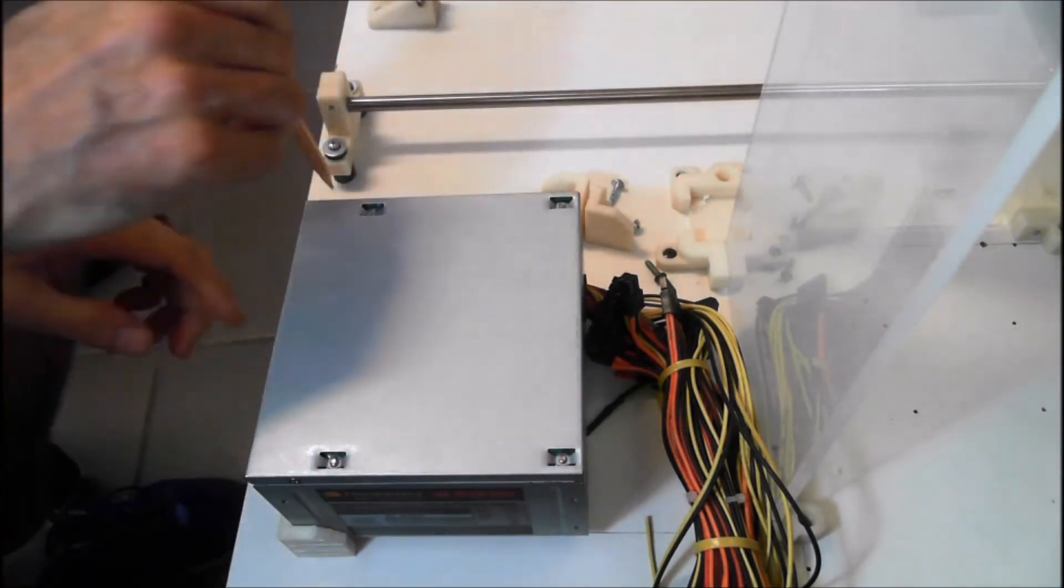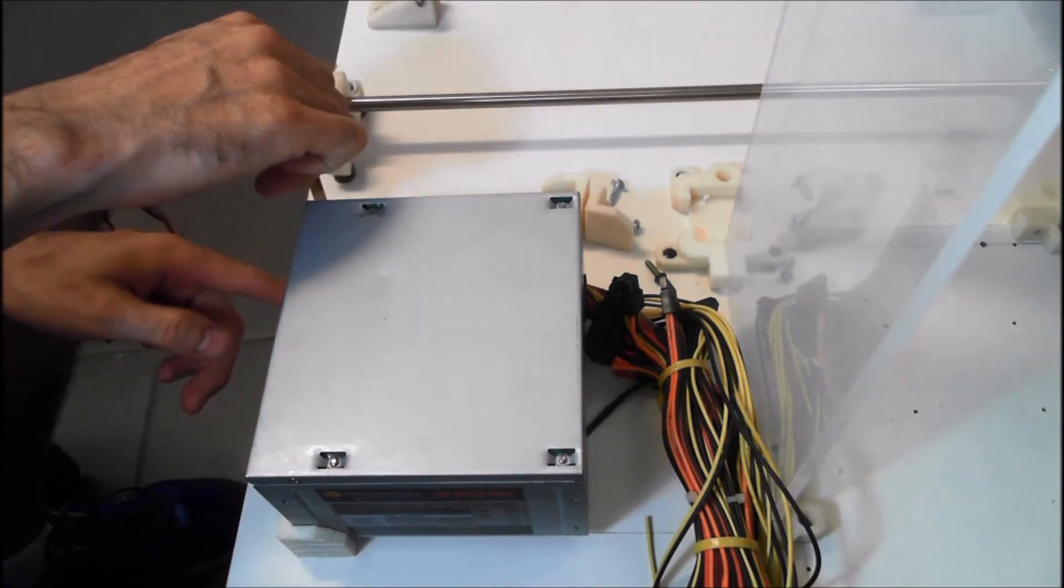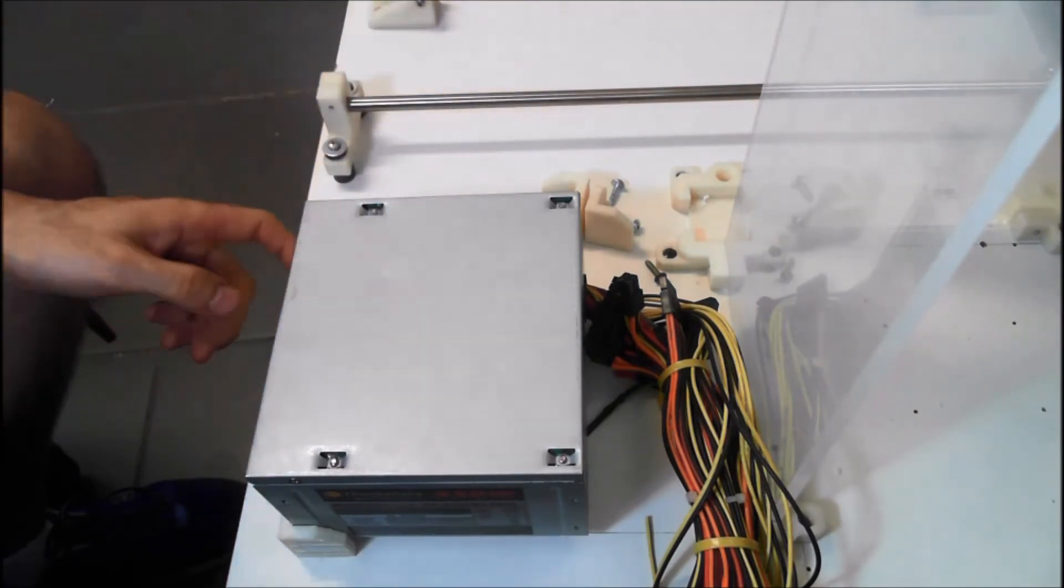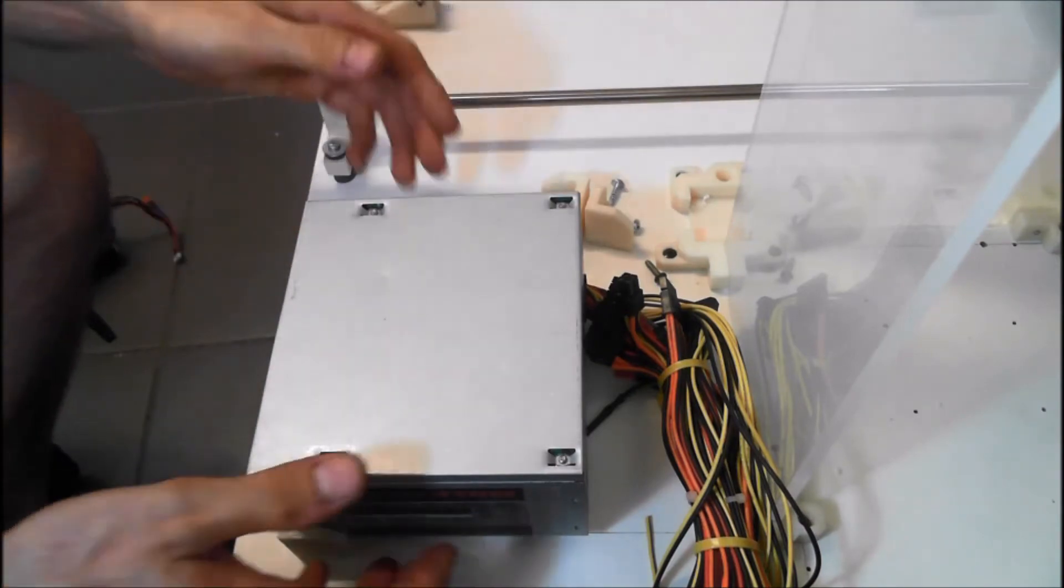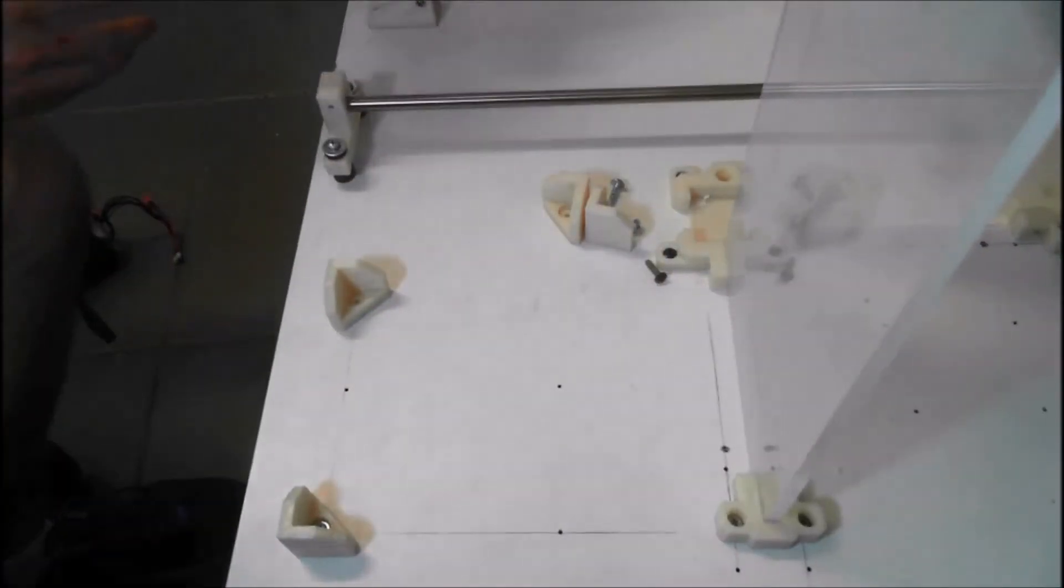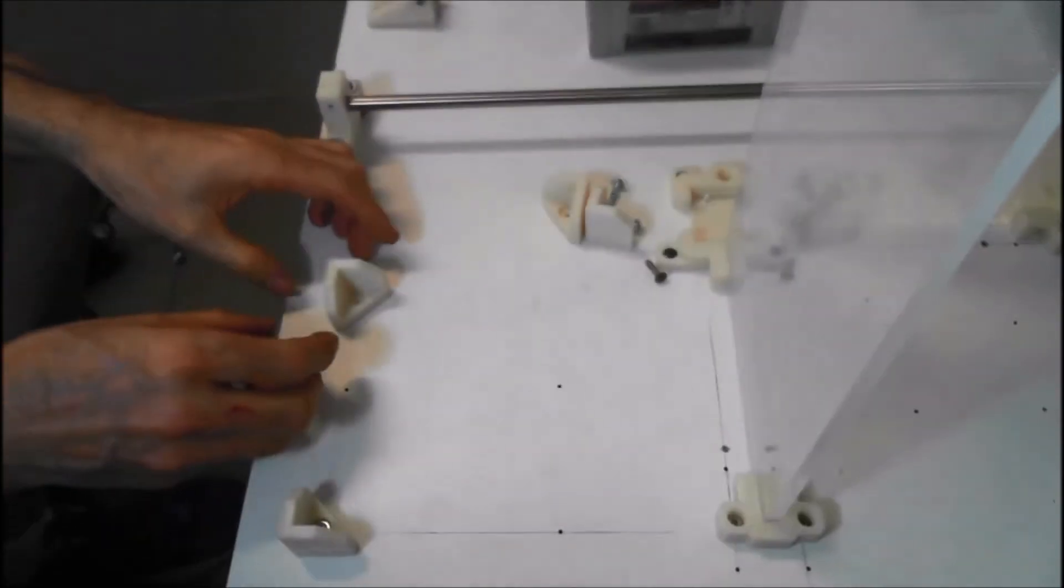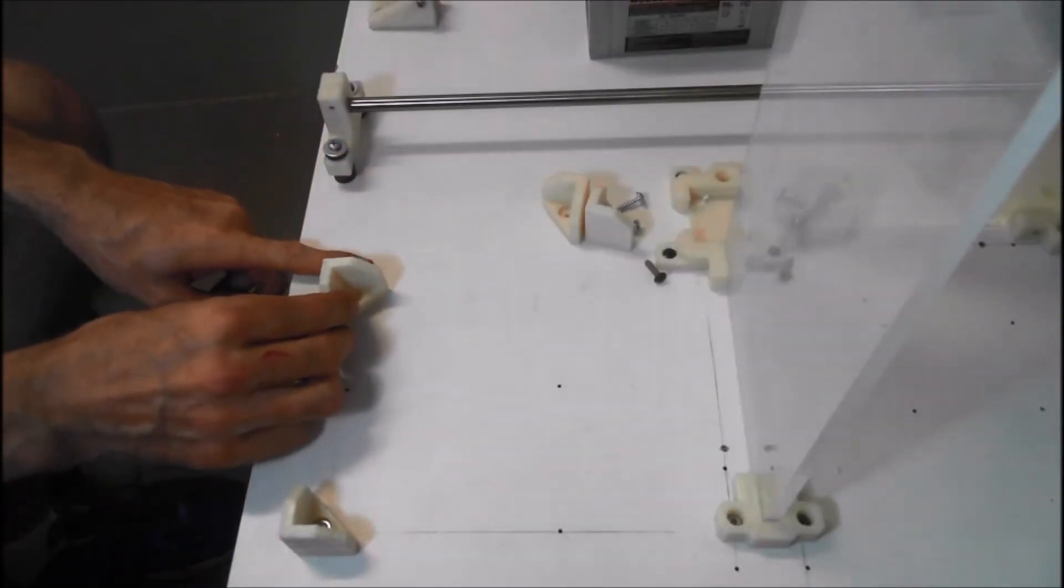Grab yourself a pencil and just mark a line on the back edge of the corner to the right width. Remove your power supply and just see where I put the line there.